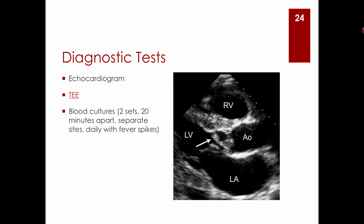The key diagnostic test is the echocardiogram or transesophageal echo. On the slide deck, there is a video showing a large vegetation on the aortic valve moving back and forth. For blood cultures, we obtain two sets 20 minutes apart at separate sites, and daily with any fever spike.